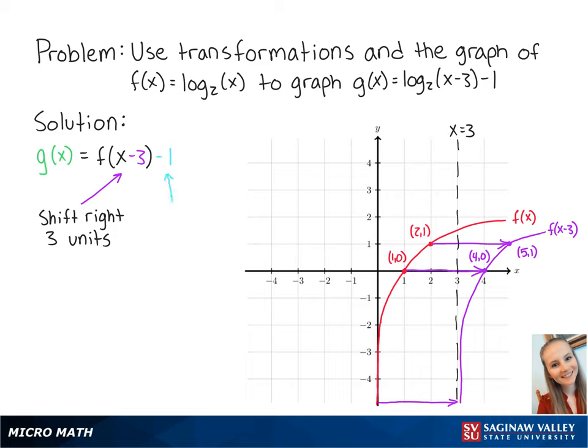Subtracting 1 from the function means that we shift the graph 1 unit down. So our new points are (5,0) and (4,-1).